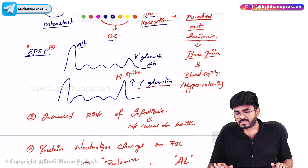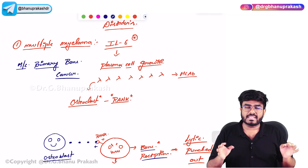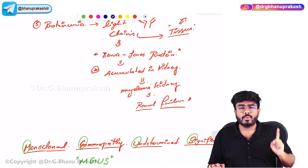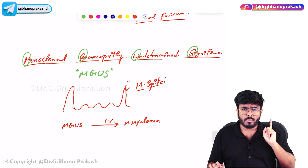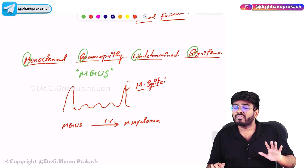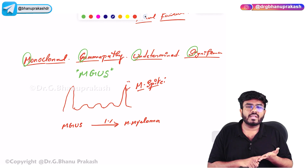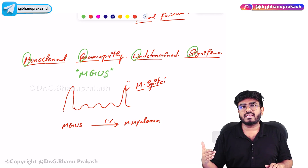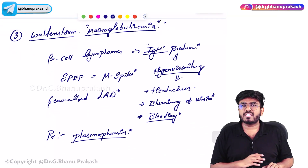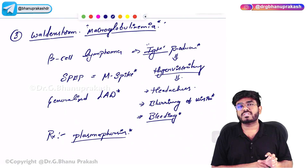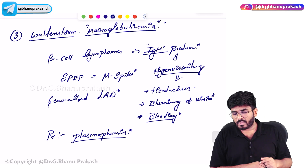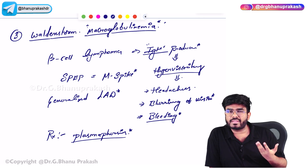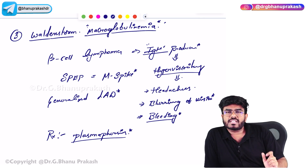With this, we have completed the three plasma cell dyscrasias. First, multiple myeloma: lytic punched-out bone lesions, hypercalcemia, bone pain, monoclonal antibodies, M-spike on S-PEP, Bence Jones proteins, myeloma kidney, AL amyloidosis. Second, MGUS: only M-spike, no hypercalcemia, no Bence Jones proteins, no lytic lesions — 1% can progress to multiple myeloma. Third, Waldenström's Macroglobulinemia: B-cell lymphoma, high IgM antibodies, hyperviscosity causing visual abnormalities and headaches, treated with plasmapheresis. Hope the video is helpful. Thank you.